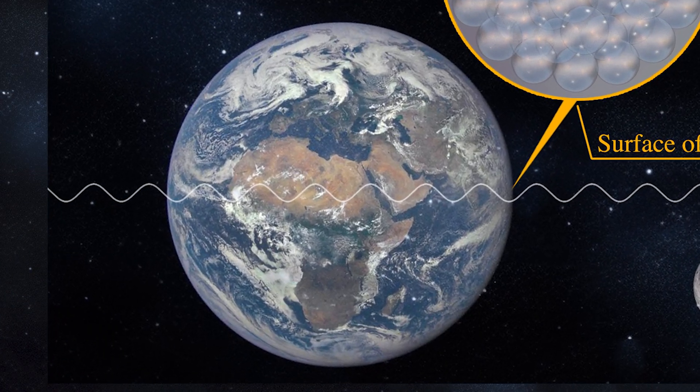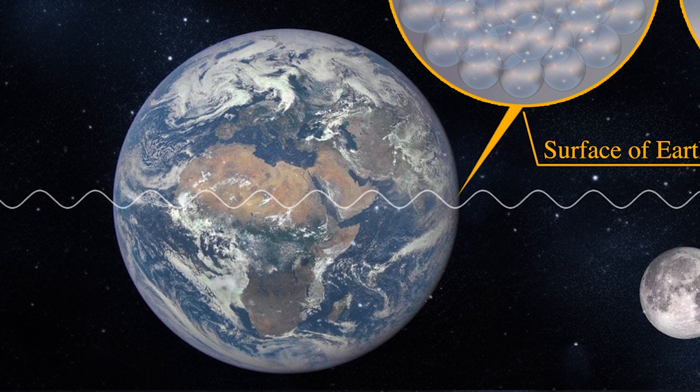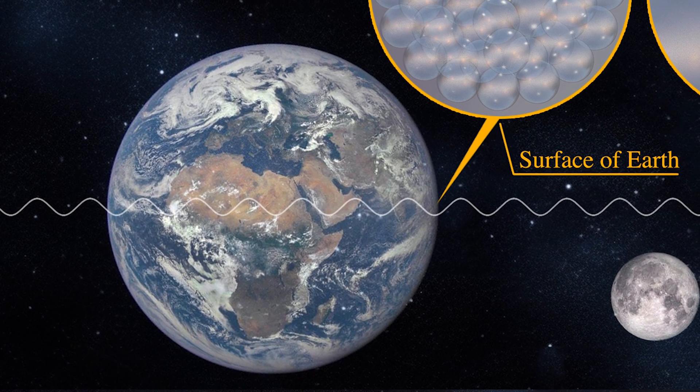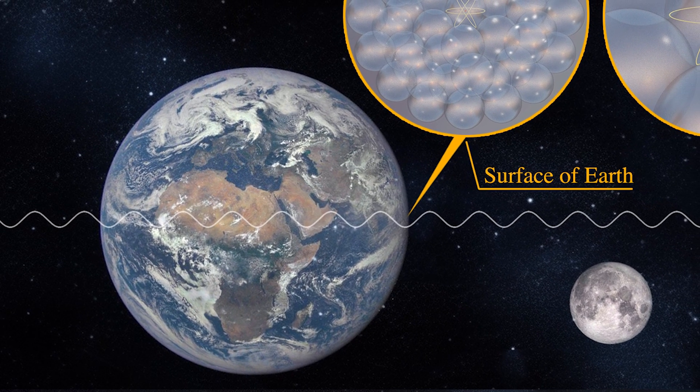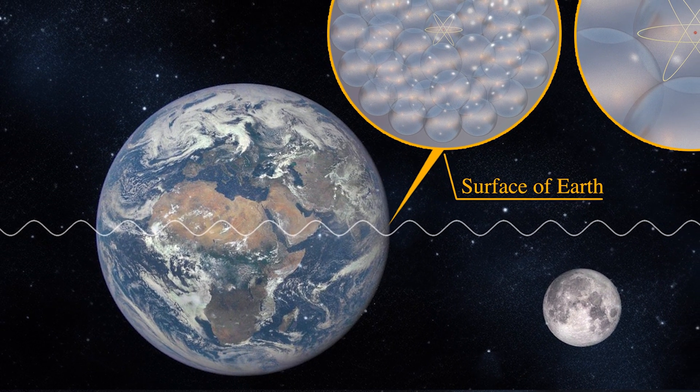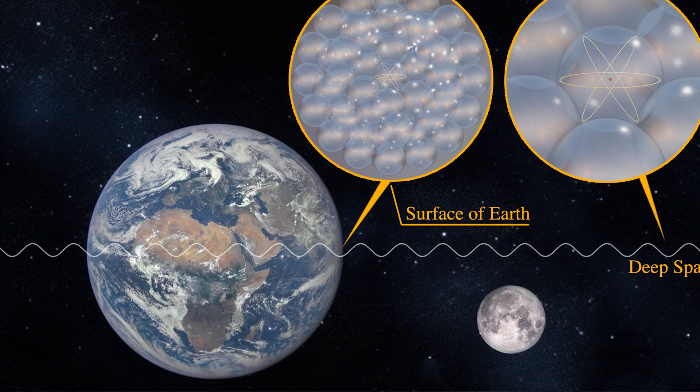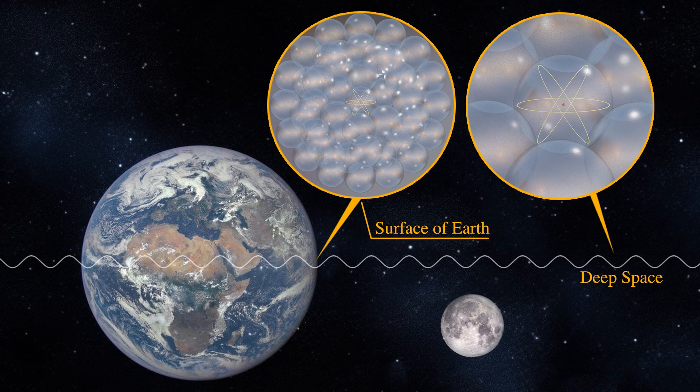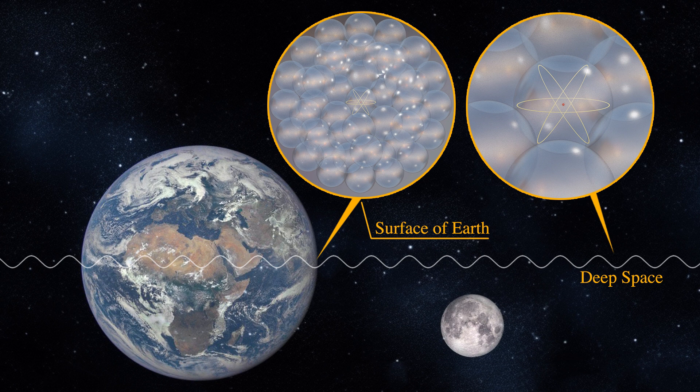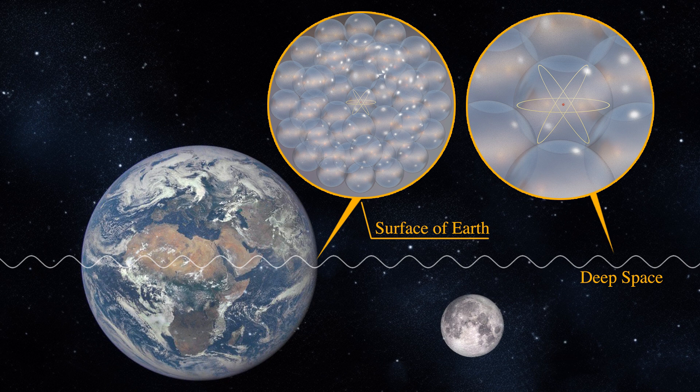In 1971, the Hafele and Keating experiment tested and concluded Einstein's predictions of time dilation using four cesium atomic beam clocks flying around the world. Although the test used moving clocks instead of light particles in Einstein's prediction, it may also show that cesium atoms are affected by different environments of the fabric of space. The experiment may also show that a cesium atom acts differently at rest on the surface of the earth than it does miles above the surface traveling with the rotation of the earth, and differently in the opposite direction of the rotation of the earth.